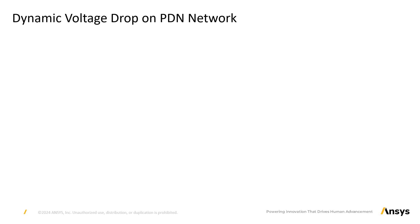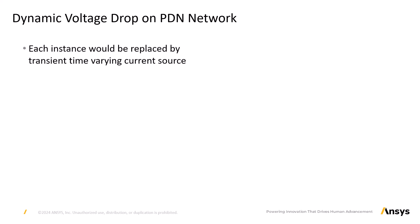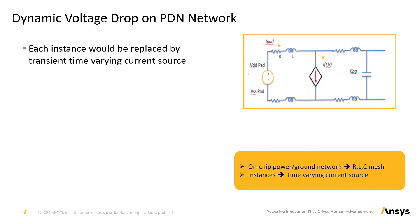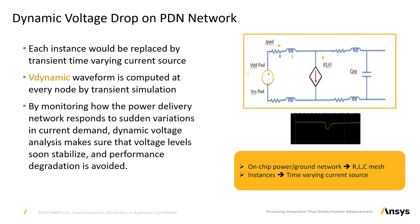Dynamic voltage drop on PDN. Each instance is now modeled as a time-varying current source, characterized by detailed SPICE simulations for each cell. In reality, the power distribution grid is more complex than just a mesh of resistors. The interconnects are placed very close to each other and behave like capacitors that store charges. The interconnects also carry time-varying currents that cause magnetic flux and self-inductance. Therefore, the PDN grid is now modeled as a mesh of resistance, capacitance and inductance to capture transient effects. A time-varying transient analysis is solved to capture the transient voltage waveform at each node, identifying power supply noise due to high inductance and analyzing grid responsiveness to sudden changes in current.